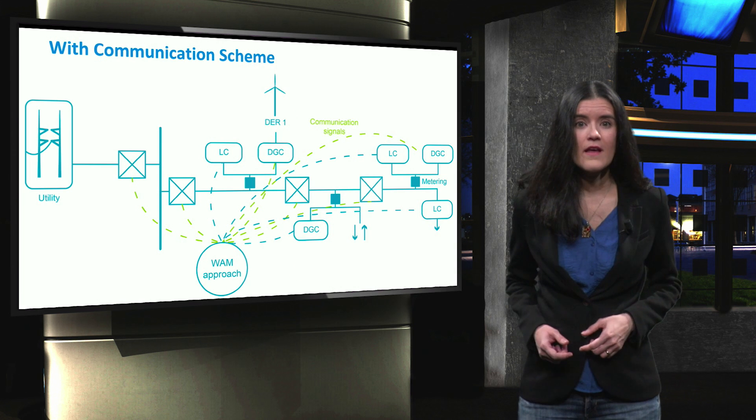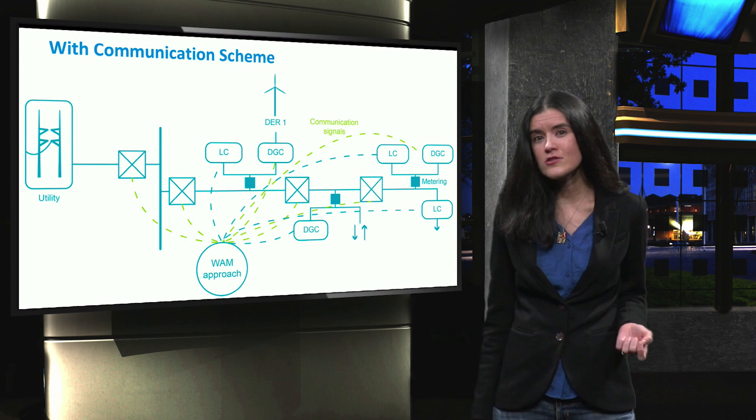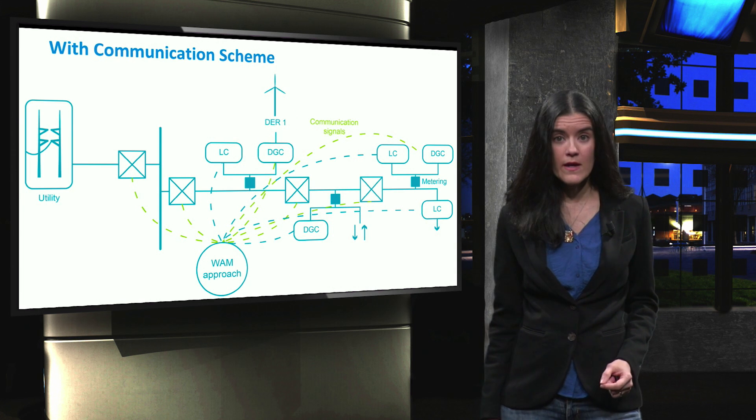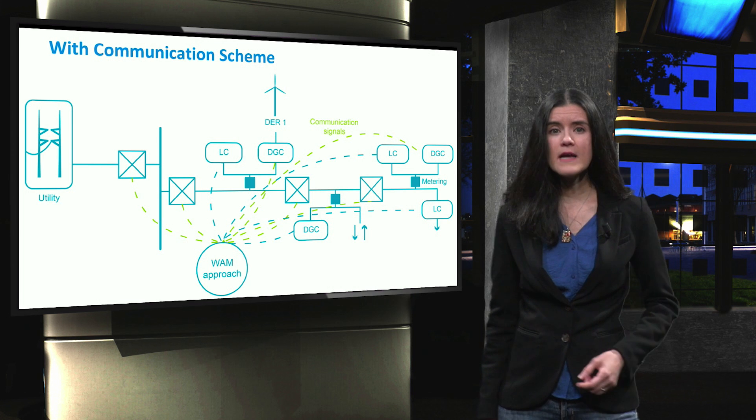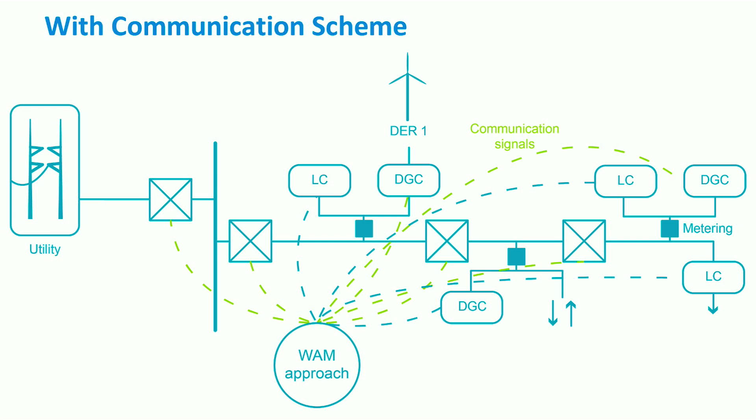On the other hand, if a communication infrastructure is implemented, the settings of the relays can be adjusted, taking into account several factors, such as the configuration of the network and the type and location of the distributed generators. The scheme can be implemented in either a centralized or decentralized way. The figure shows the decentralized scheme, based on a wide area measurement.